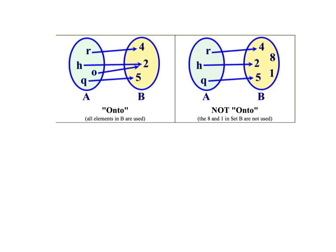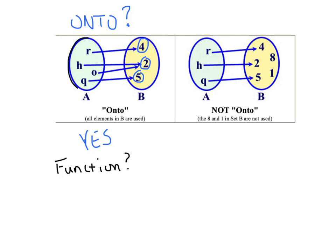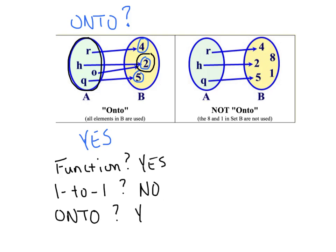Looking at the mapping on the left, we ask: does every output get used? The 4 got used, the 2 got used, the 5 got used — every member in set B got used, so yes, this is onto. As a review: is it a function? All inputs are unique, so yes. Is it one-to-one? The output 2 got used more than once, so no, it's not one-to-one. But it is onto because every member in the output set got used.